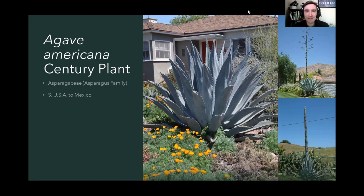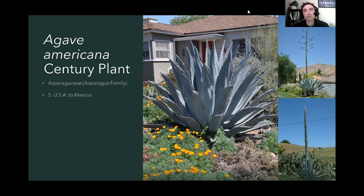From the agave we can get food — we get agave nectar, which usually comes from a very specific species, not necessarily Agave americana. And of course we get tequila, the fermented alcohol. Traditionally, the plant itself has been a valuable food source, fiber source, water source, and building material. There are all sorts of different traditional uses of the plant that are worth exploring.